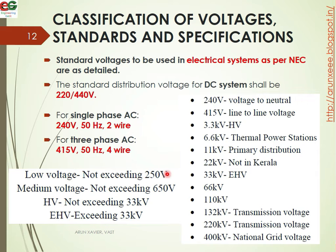Next is classification of voltage. According to standard specifications declared in the NEC, the DC system standard voltages include single phase 240 volt at 50 Hz with neutral, and three phase 415 volt with 4-wire neutral.